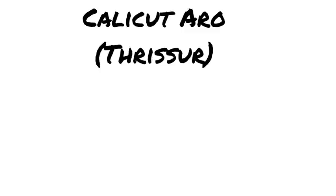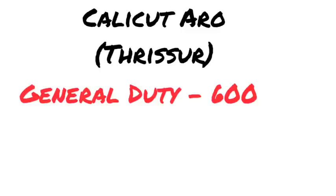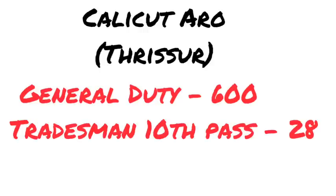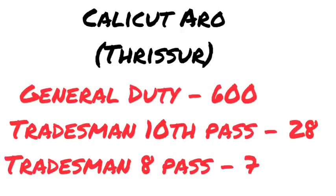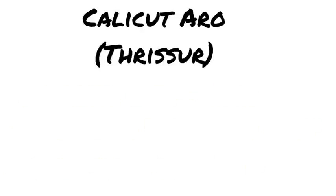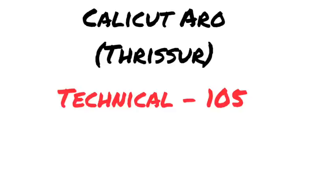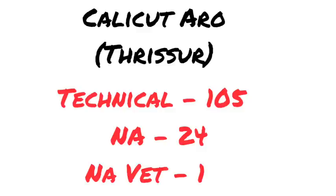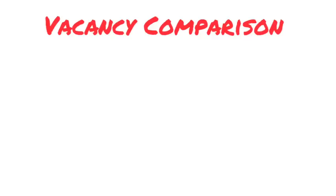They have the vacancy. The soldier in general duty — GD Posts — total 600 vacancies, that is recruitment. Soldier Tradesman 10th Pass Posts: total 26 vacancies. Soldier Tradesman 8th Pass: total 7 vacancies. Soldier Tradesman 10th Pass: total 35 vacancies. Soldier Tradesman 10th Pass: total 24 vacancies. Soldier Tradesman 10th Pass: total 1 vacancy and more vacancies.